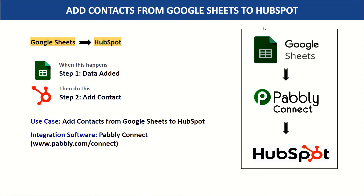Imagine this: you added data of a person called John in Google Sheets. It has John's name, email address, phone number and all those details. Now you want to add John as a contact in HubSpot. You have two options — either you can copy all the details of John from Google Sheets and manually create a contact in HubSpot, which is repetitive and tiresome, or you can bring in some automation so that when new data is added in Google Sheets it will automatically create a contact in HubSpot.